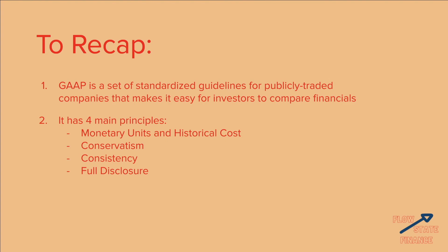The second principle is conservatism, which consists of two things. One: you must count a loss as soon as it can be quantified and confirmed — as soon as you know the value and you've confirmed it is a loss, you must count it. And conversely, for gains, you must make absolutely sure that a gain has occurred before you account for it in your books.